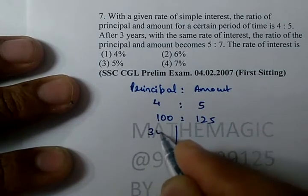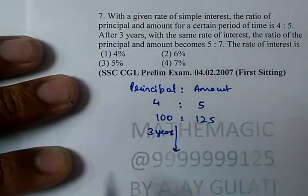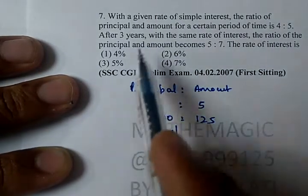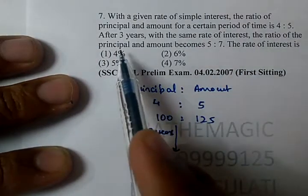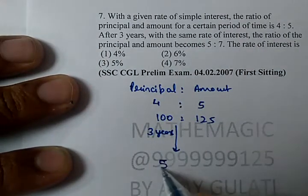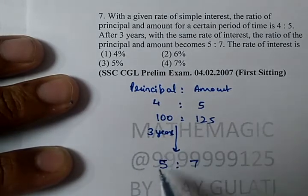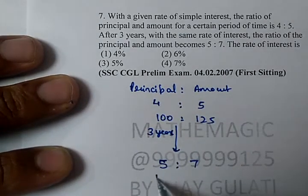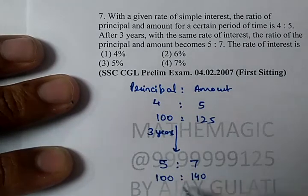What happens after 3 years? The ratio of principal and amount is 5:7. 5:7 means — if principal is 100, then amount is 140. Both multiplied by 20.